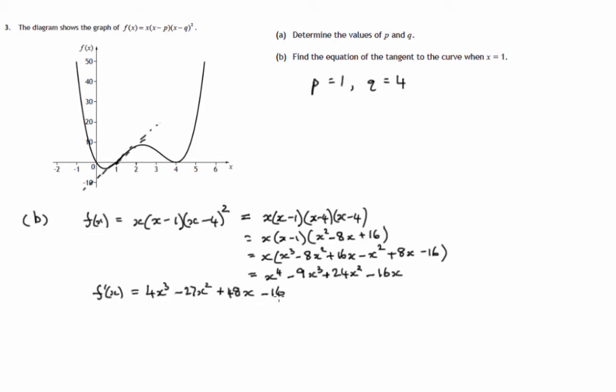So in particular, when x is 1, the gradient will be 4 times 1 cubed, that's 4, minus 27 times 1 squared, that's 27, plus 48 times 1, that's 48, minus 16.